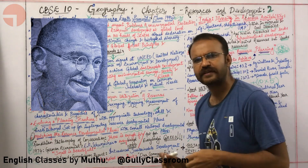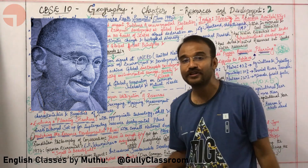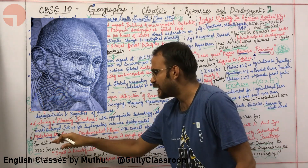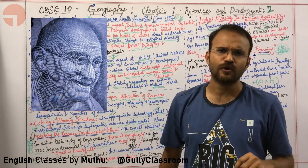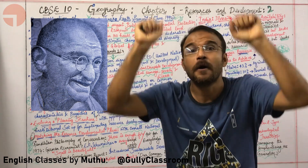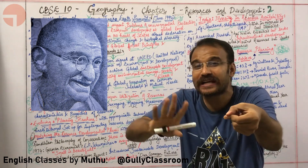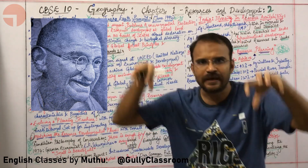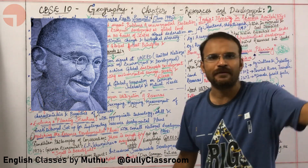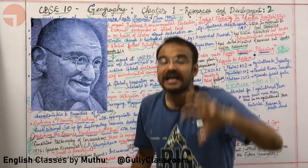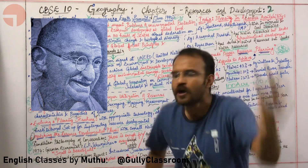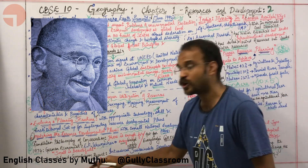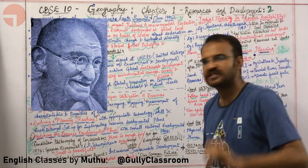Gandhi said that there is enough resource for everybody's need, but not enough resource for everybody's greed — that is the Gandhian philosophy of conservation. Gandhi also preferred production by the masses rather than mass production in factories, where people are self-sustainable. In 1974, German economist E.F. Schumacher wrote about the Gandhian philosophy of conservation in his book, Small is Beautiful.